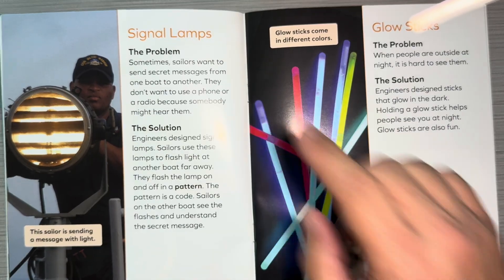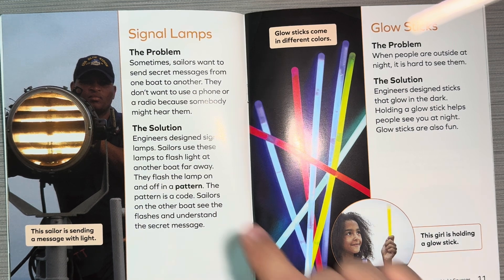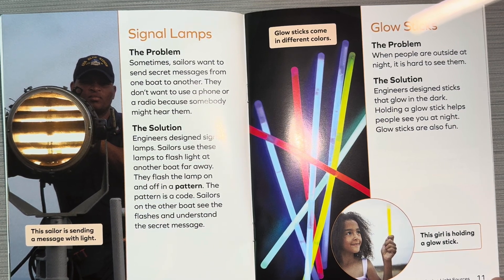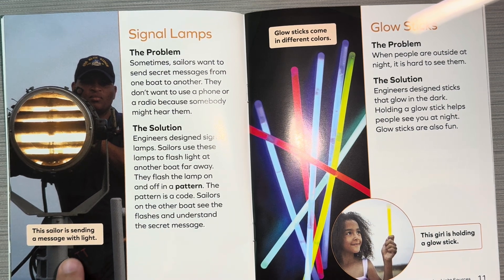Signal lamps. The problem: sometimes sailors want to send secret messages from one boat to another. They don't want to use a phone or a radio because somebody might hear them. The solution: engineers design signal lamps. Sailors use these lamps to flash light at another boat far away. They flash the lamp on and off in a pattern. The pattern is a code. Sailors on the other boat see the flashes and understand the secret message. This sailor is sending a message with a light.